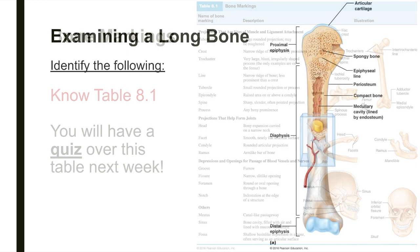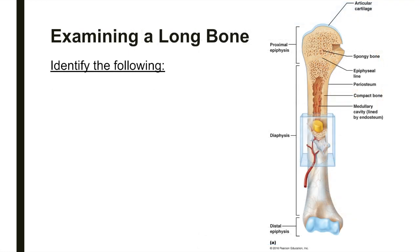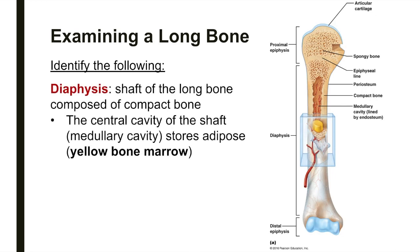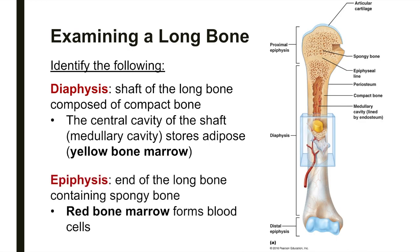We will be studying the anatomy of a typical long bone in lab. The diaphysis, or shaft of the long bone, is composed of compact bone, while the epiphysis, or the end of the long bone, is composed mostly of spongy bone. In an adult, the central cavity of the shaft, or the medullary cavity, is the storage region for adipose, or yellow bone marrow. In adult bones, red bone marrow is confined to the interior of the epiphyses.